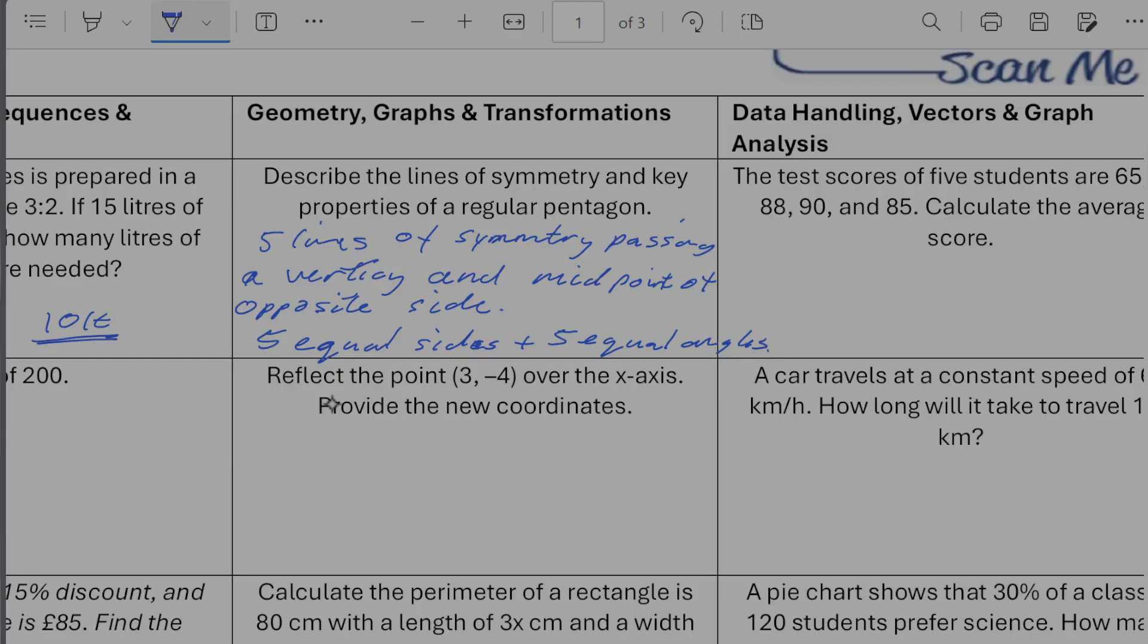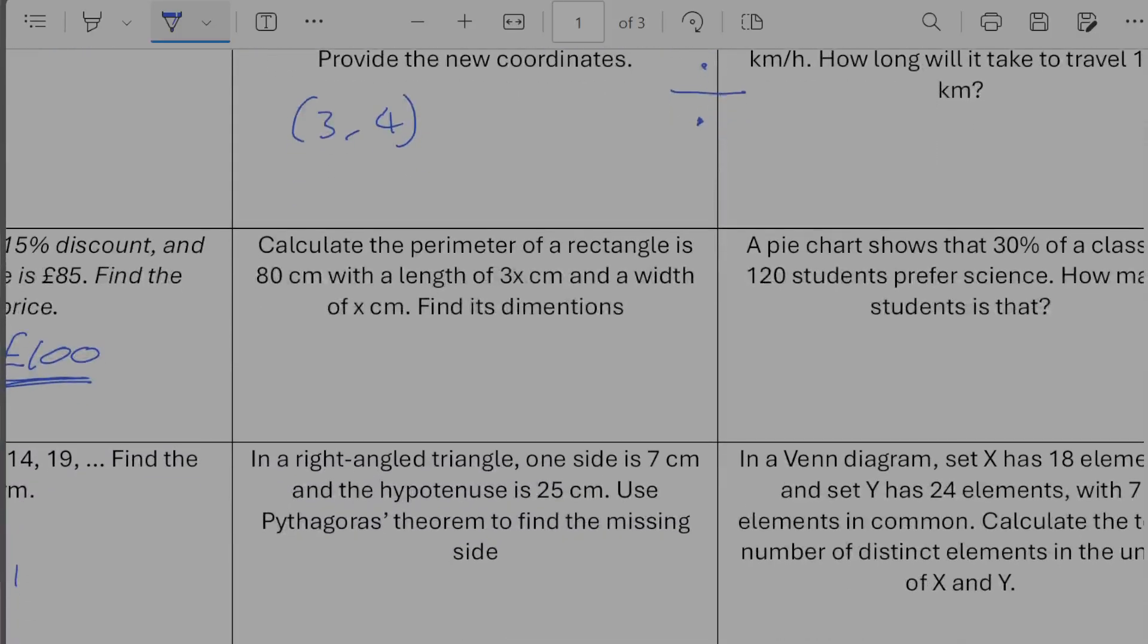Reflect the point 3 minus 4 over the x-axis provide the new coordinate. So if we're reflecting in the x-axis it means that y values are going to be the negative version. So if we're going from 3 minus 4 the new point would be 3, 4.